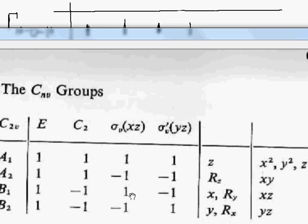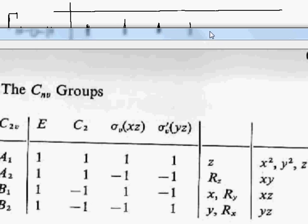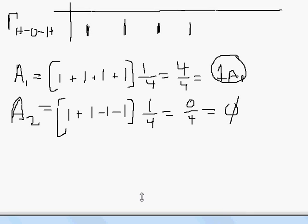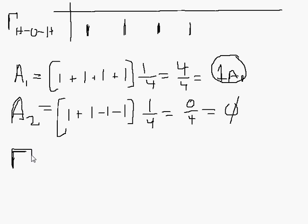And B1, again you have two positive ones, two negative ones. That's going to cancel out. B2, two positive ones, two negative ones. That's going to cancel out again. So basically... Let me just start a new page again.